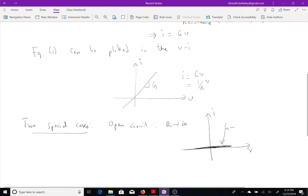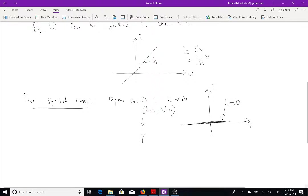So, G going to 0. In other words, the current flowing through an open circuit is 0, so irrespective of the voltage across the resistor, so that's the symbol for an open circuit, so I equals 0, V can be anything.